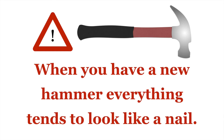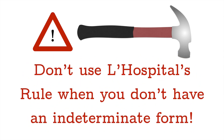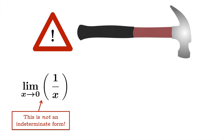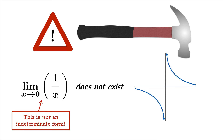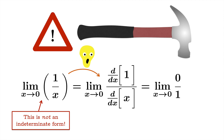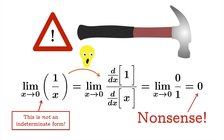Now this leads us to a warning. When you have a new hammer, everything tends to look like a nail. Don't use L'Hôpital's rule when you don't have an indeterminate form. Consider the limit as x approaches 0 of 1 over x. This is not an indeterminate form — the numerator does not go to zero. The limit does not exist: from the right the limit diverges to infinity, and from the left it diverges to negative infinity. If you blunder ahead with L'Hôpital's rule, you obtain the limit of 0 over 1, and limit laws give zero — which is nonsense. Don't use L'Hôpital's rule when it's not available to you.